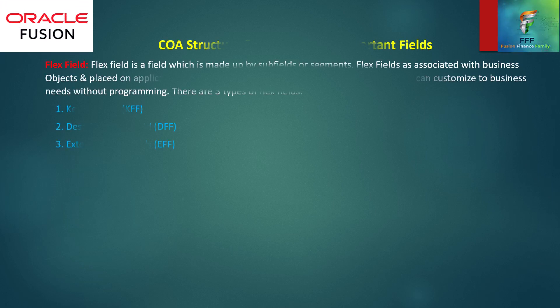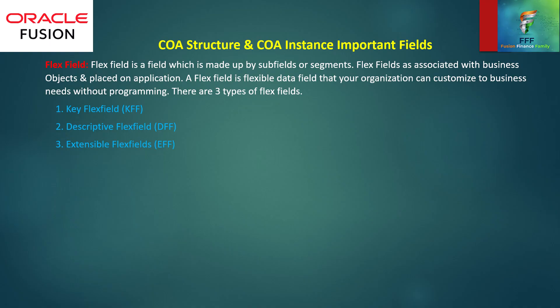Now we have to know about COI structure and COI instance important fields. Those are like flexi fields. A flexi field is a field which is made up of sub-fields or segments. Flexi fields are associated with business objectives. Based on the application, a flexi field is a flexible data field that your organization can customize to business needs without programming. There are three types of flex fields: key flexi field, descriptive flexi field,